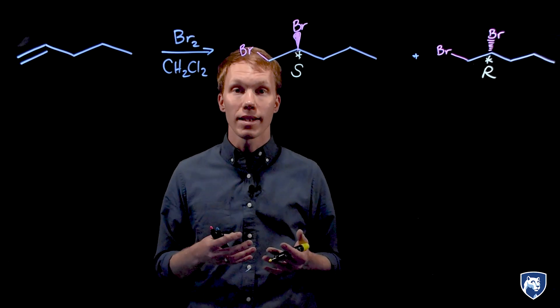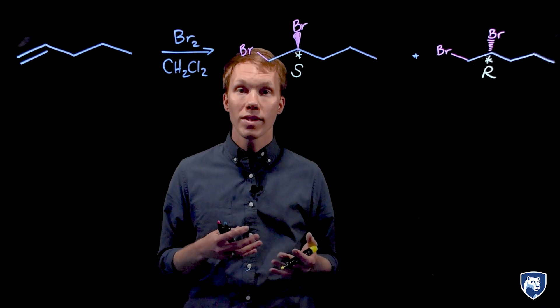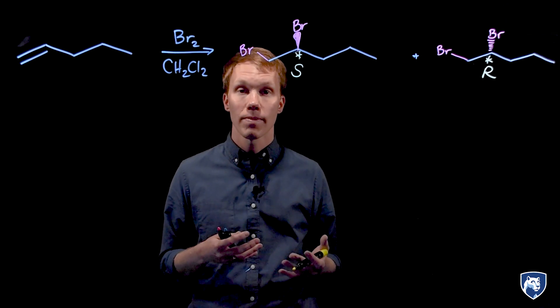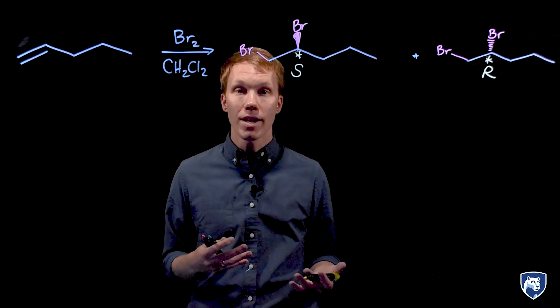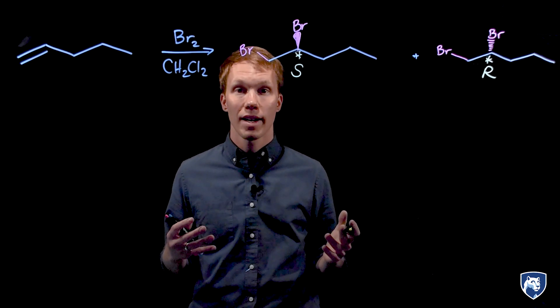A reaction is stereoselective if one or more stereoisomers are produced in excess of the others. In this example, the two possible stereoisomers are produced in equal amounts. So this reaction is not stereoselective.